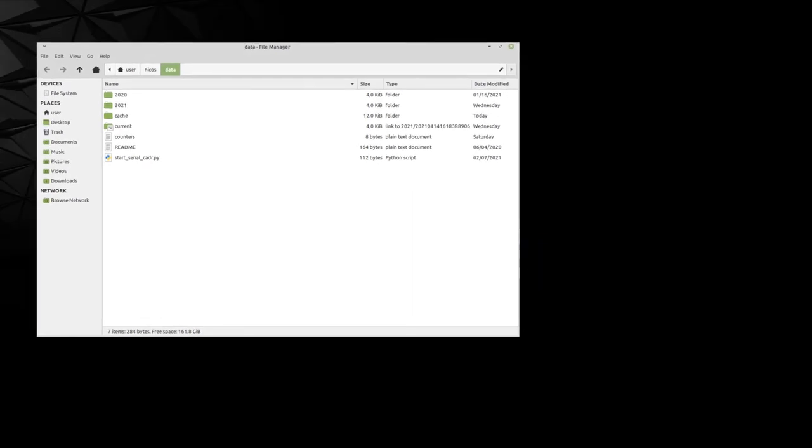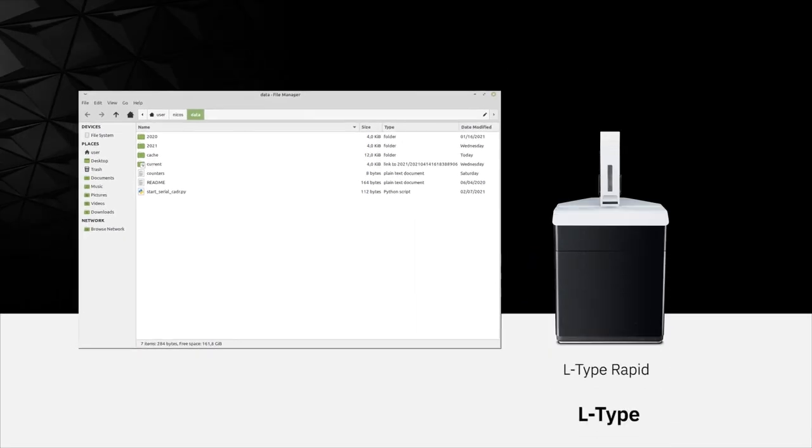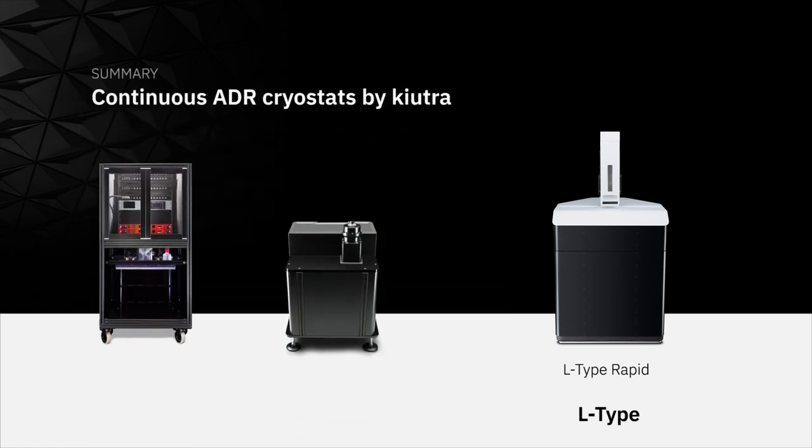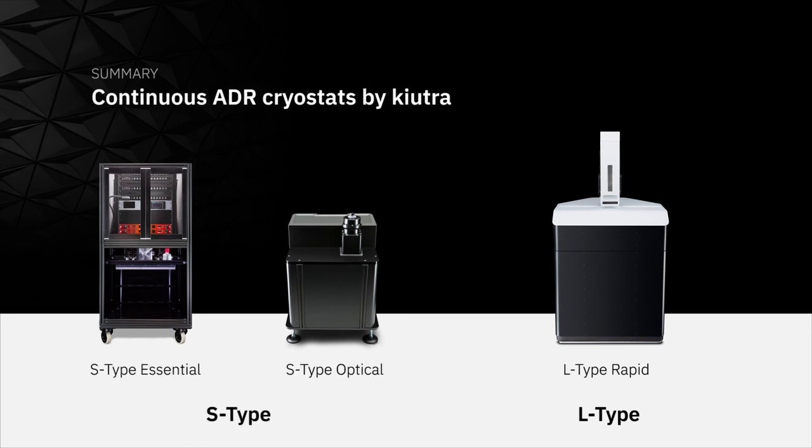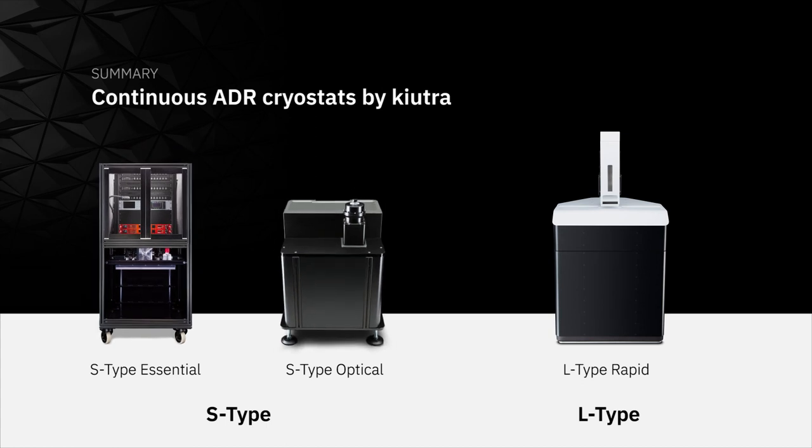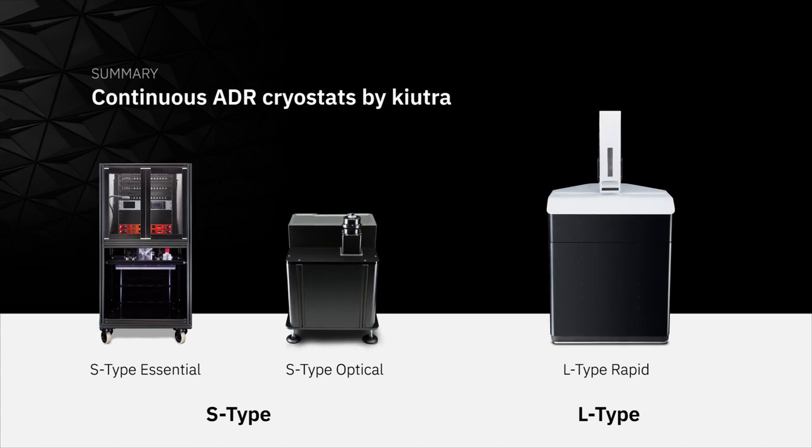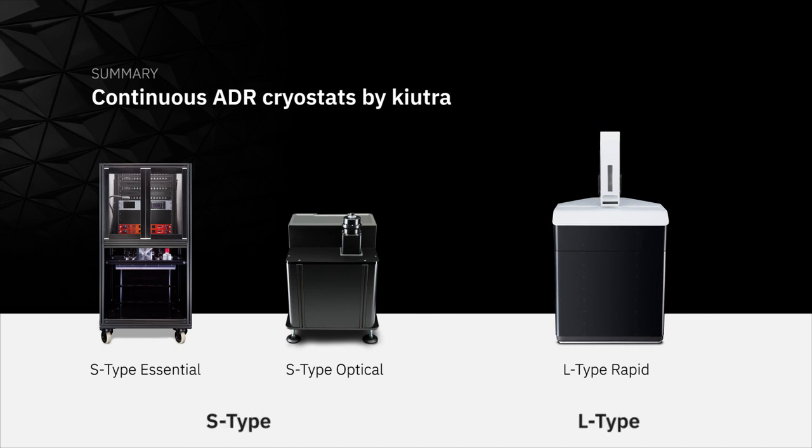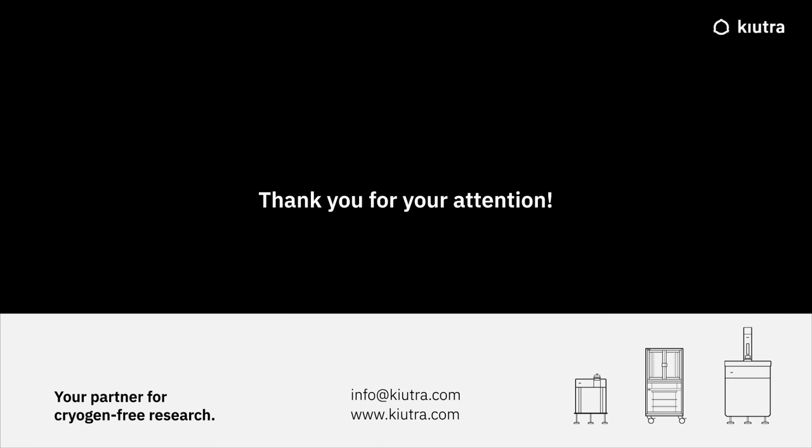I hope this gave you a good impression of our L-Type Rapid and how it can be used for fast, low-temperature measurements. So to sum up, in this webinar we have introduced the ADR and CADR cooling principles and shown how they are implemented in our Cryostats. Depending on your needs, you can choose between our compact S-Type platform, allowing for either rack integration or optical axis, or the larger and fast L-Type Rapid for rapid prototyping and material characterization. Thank you for joining this webinar. I hope to talk to you soon about your low temperature research and your cooling requirements.